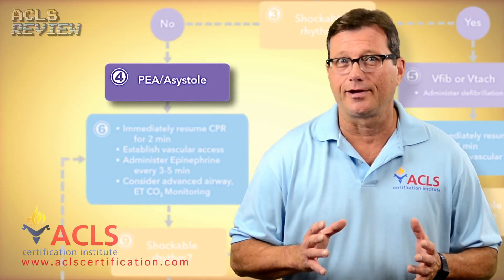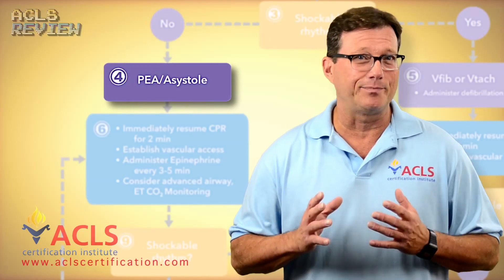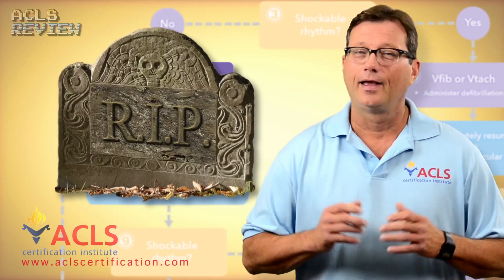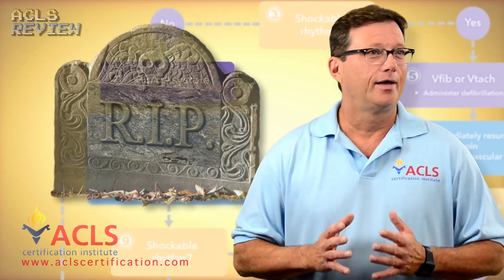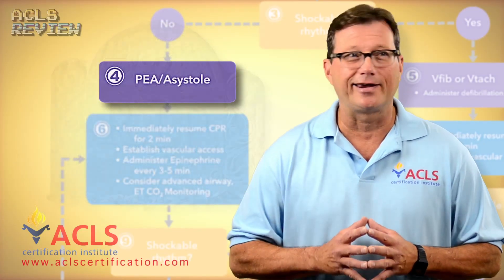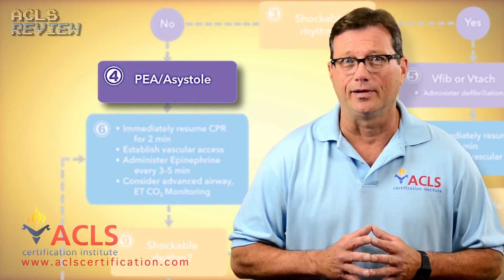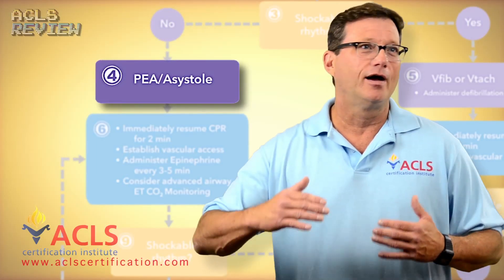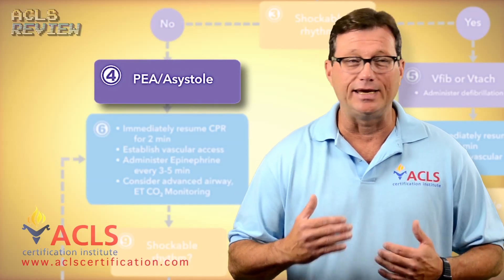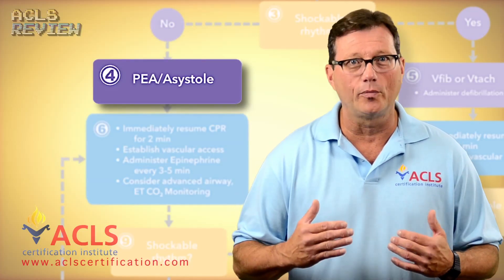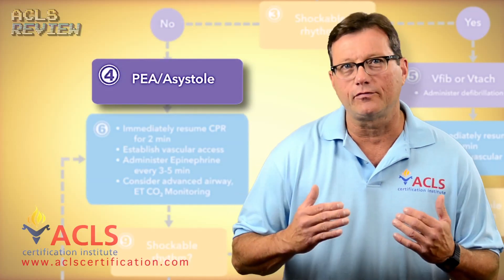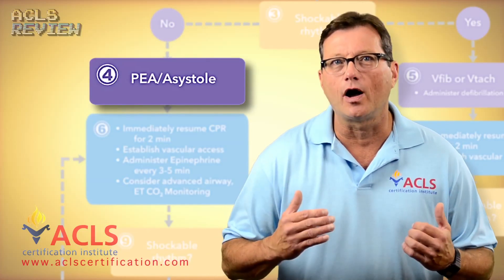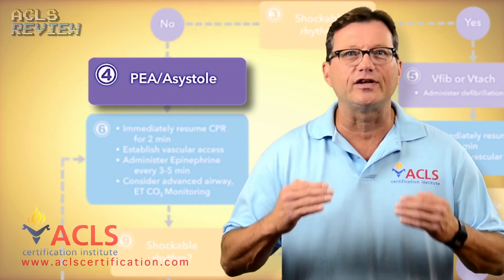Asystole and PEA carry with them horrible outcomes. Dismal prognosis — usually these are end-of-life rhythms. PEA and asystole. So don't get your hopes up. But what we're looking for is: should this occur suddenly, is there a reversible cause? Is there something we can do to fix this immediately?